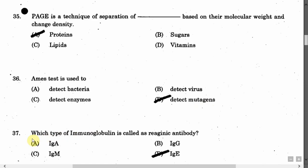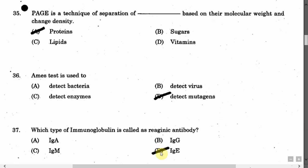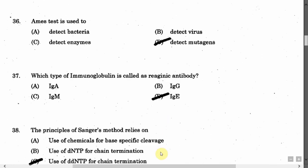The next question is: Which type of immunoglobulin is called reagenic antibodies? Option A: IgA. Option B: IgG. Option C: IgM. Option D: IgE. The correct answer is Option D, that is IgE.